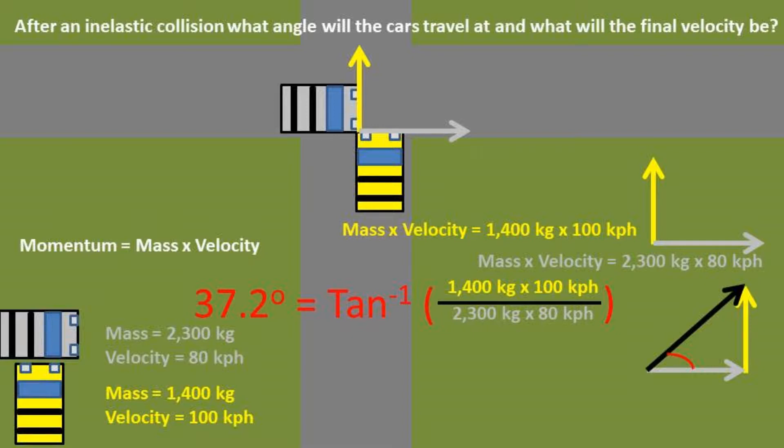Basically, what we did there is turn the vector into a right triangle. We used SOH CAH TOA to solve for the angle. Being that we had the side length opposite and the length adjacent, we used the inverse tan.